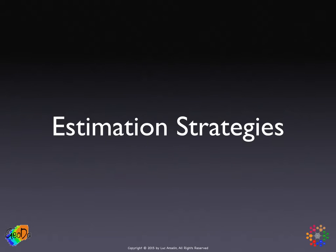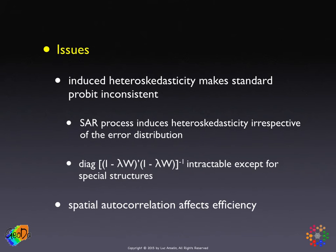Before going into more detail on the maximum likelihood and Bayesian estimation strategies for the spatial probit and Tobit models, we'll quickly give a general overview of the issue and then a number of approaches that have been suggested. The main issue is that the induced heteroscedasticity from a spatial autoregressive process makes the standard probit maximum likelihood estimator inconsistent.